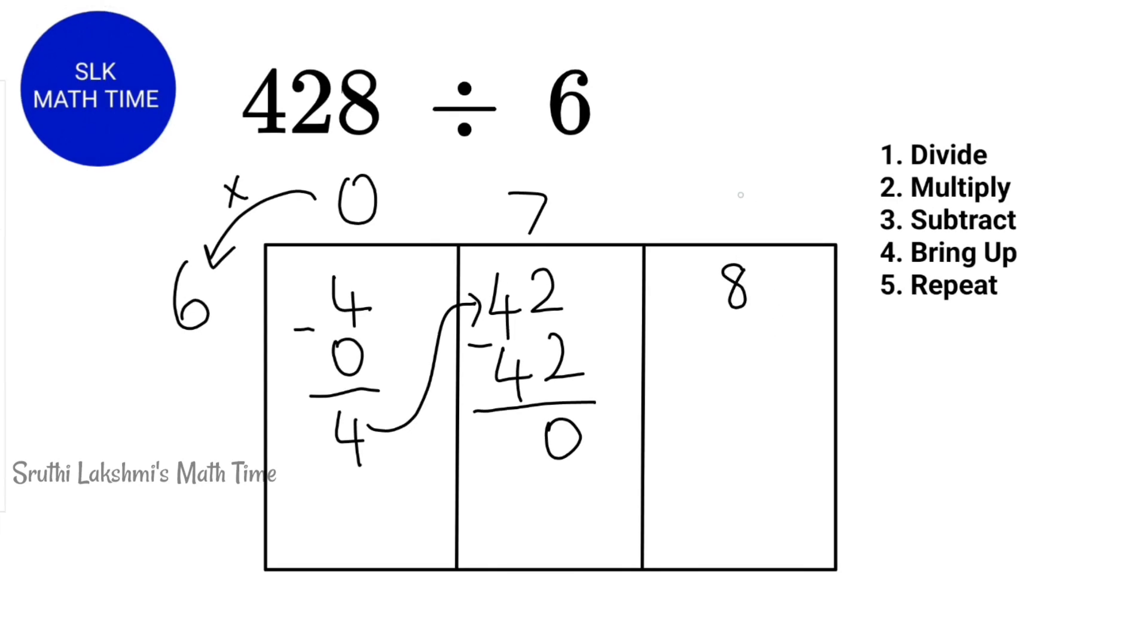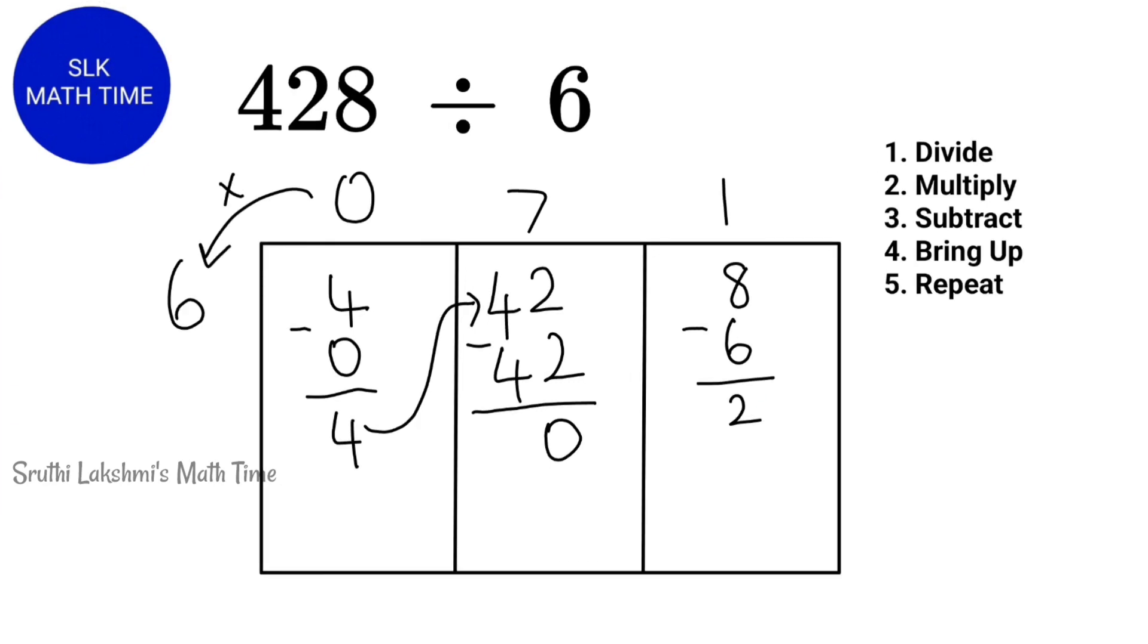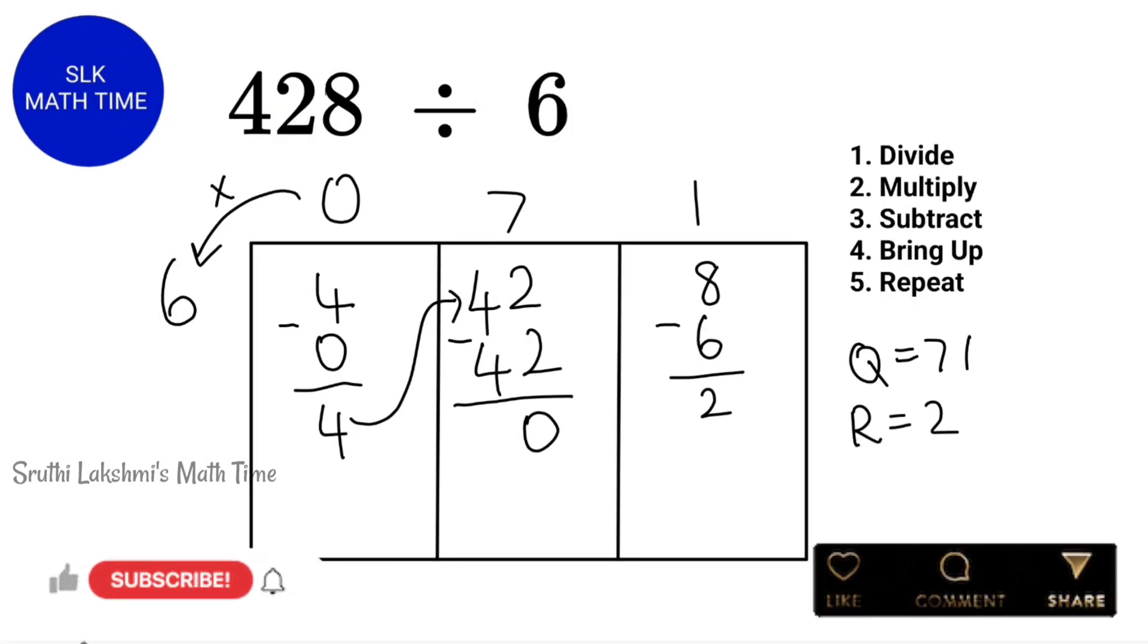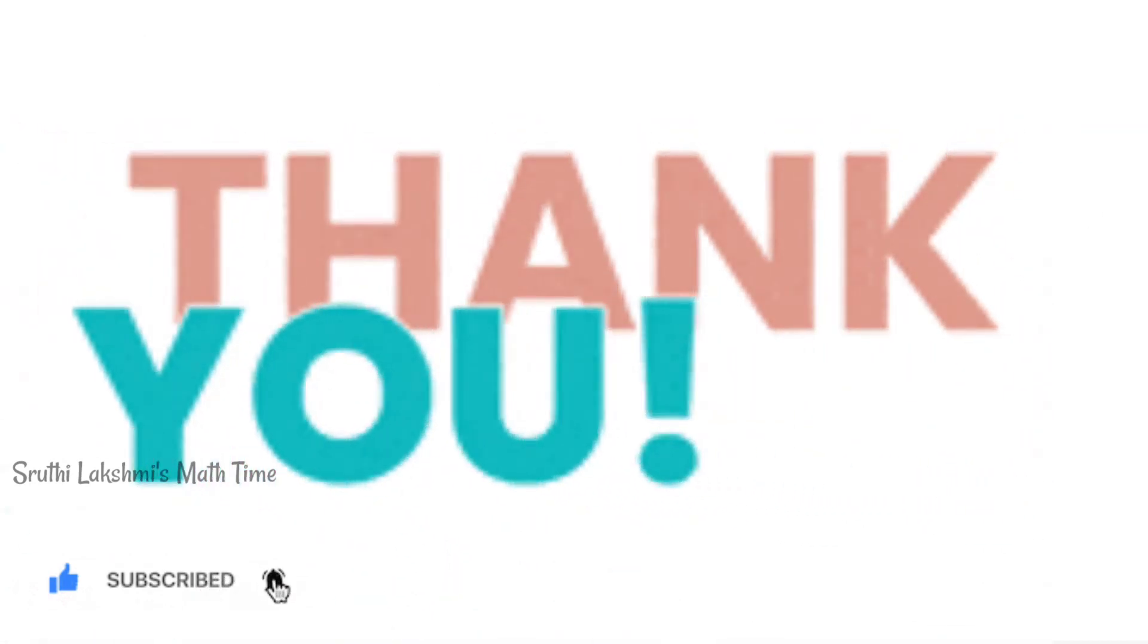1 six can fit in 8. So, we write 1. 6 times 1 is 6. So, 8 minus 6 is 2. So, our quotient here is 71 and our remainder is 2. Hope you like this video. If you like this video, don't forget to subscribe to my channel and remember to hit the bell button. Bye. Thanks for watching.